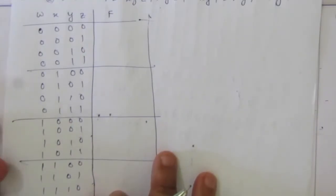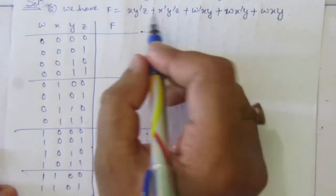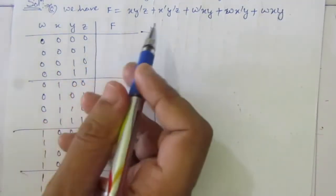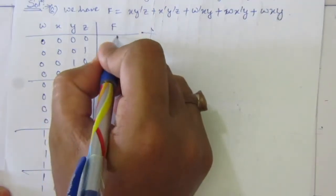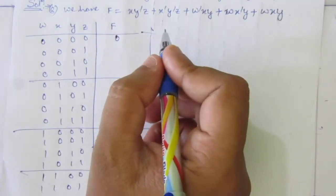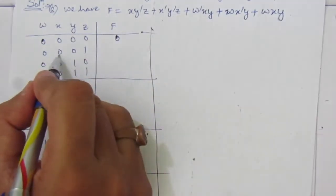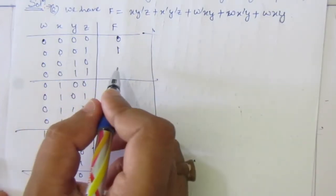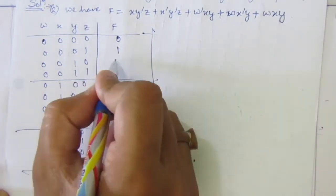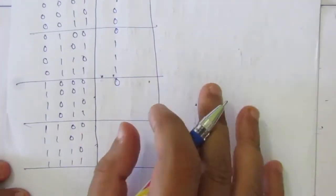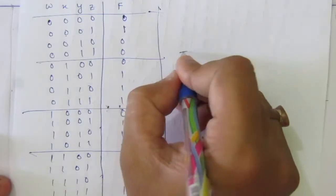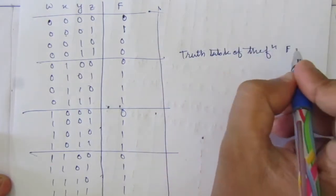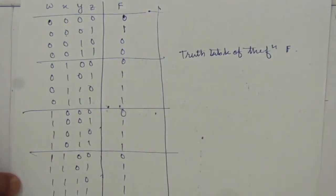Now let us find out the function f. We can see that each term contains a non-inverted term, so for all inputs equal to 0, each term will be 0. For the second row, the term x̄ȳz will be 1. Similarly, we can find out for all 16 input combinations the value of f. This completes the truth table of the function f, and the first part of the problem is done.